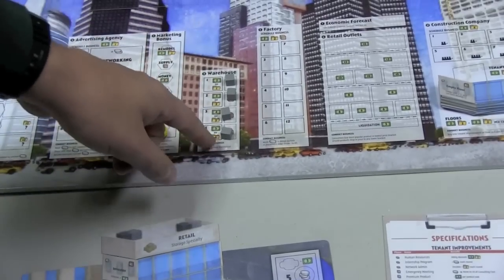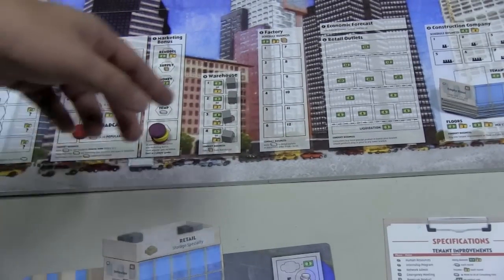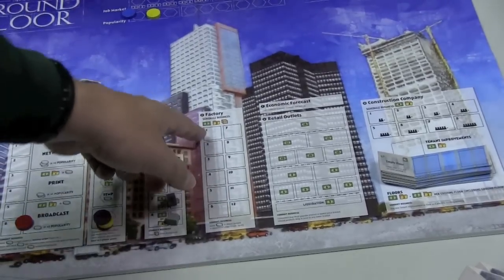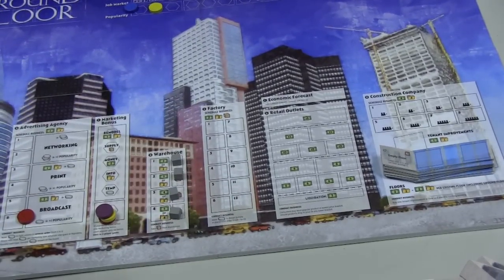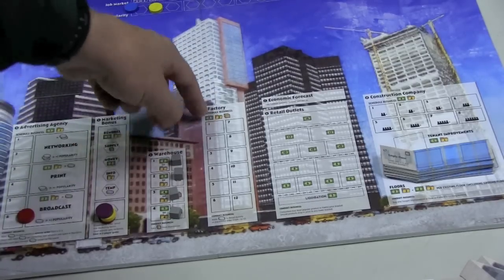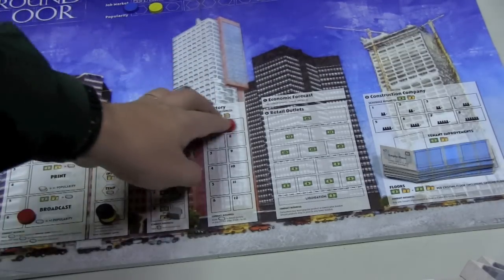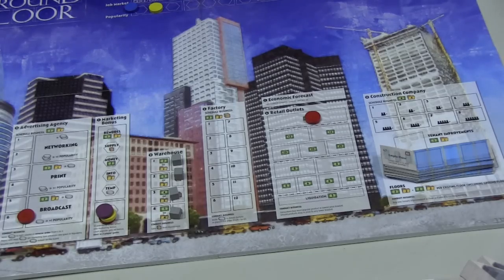Then here in the warehouse, you have a chance to buy these cubes for money or for information. The cubes are really important, especially here in the factory, because you can give up a cube, $2 and two information, to put one of your discs here. And then you'll be able to send that disc to the retail outlet and sell it for different prices. You can choose your price, but choosing your price is all going to depend on the economic forecast.